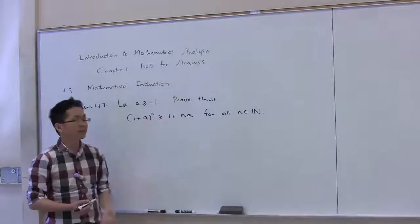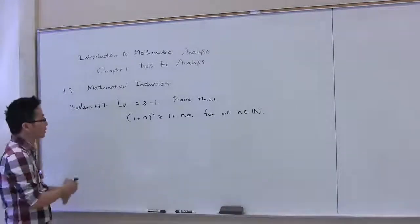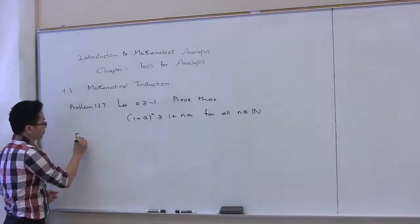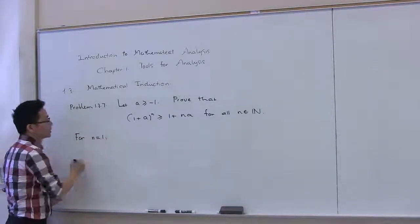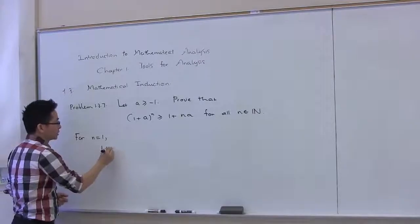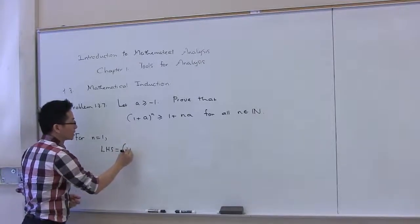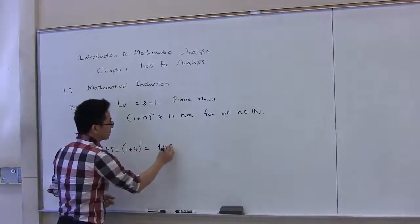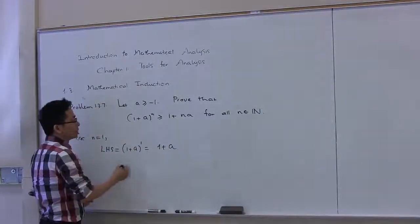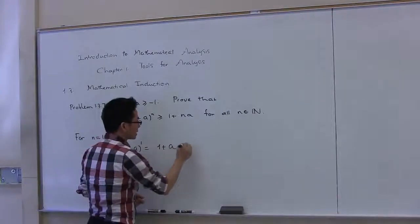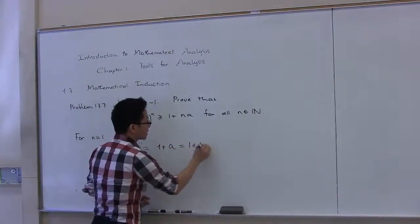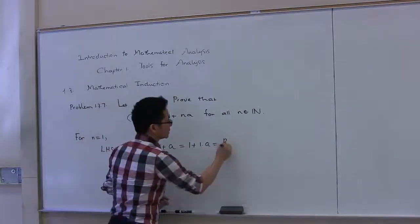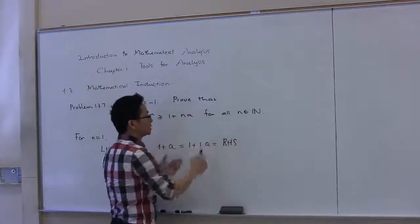We start with the base case for n equals 1. The left-hand side is equal to (1+a)^1, which is just 1+a. This can be written as 1 plus 1 times a, which is exactly the right-hand side when n is equal to 1.